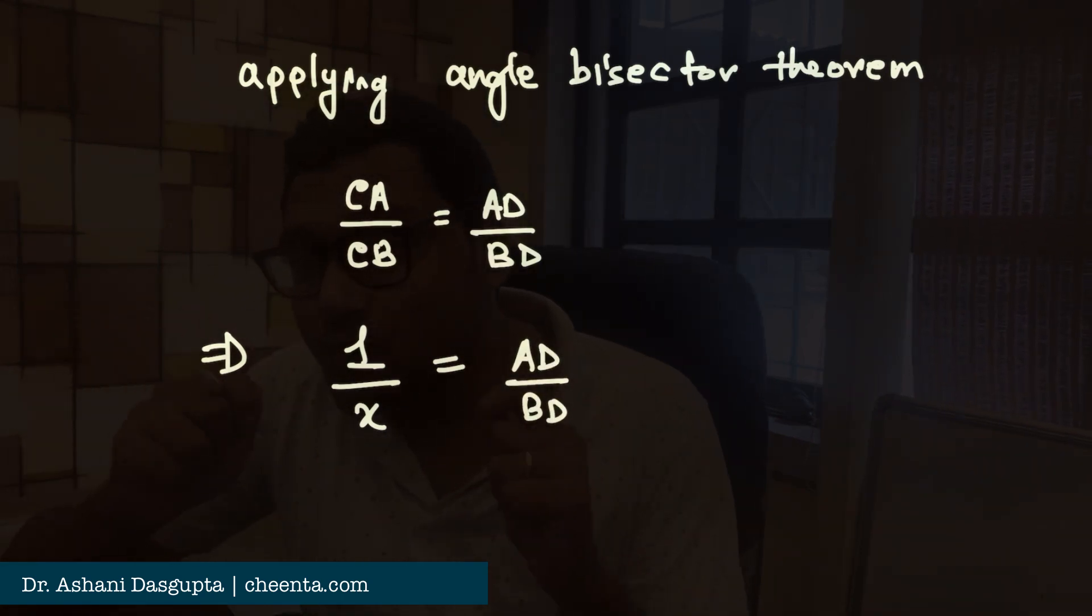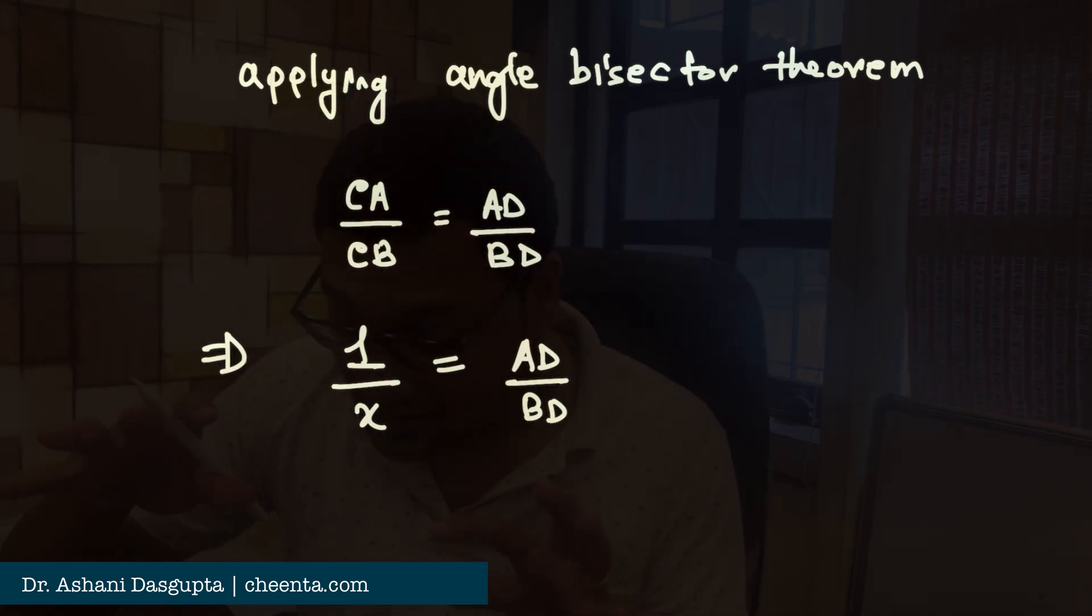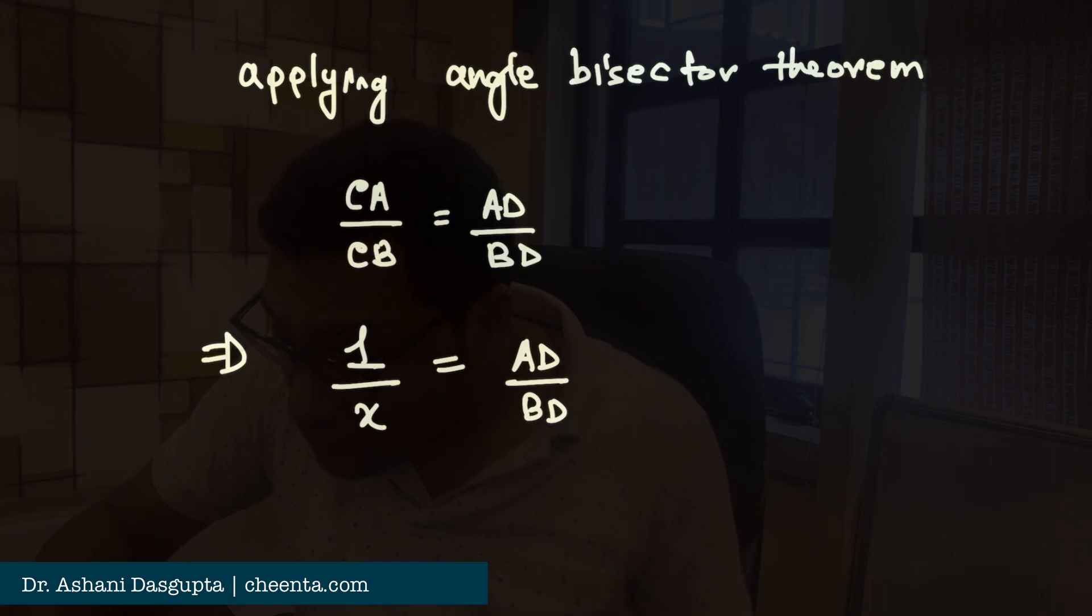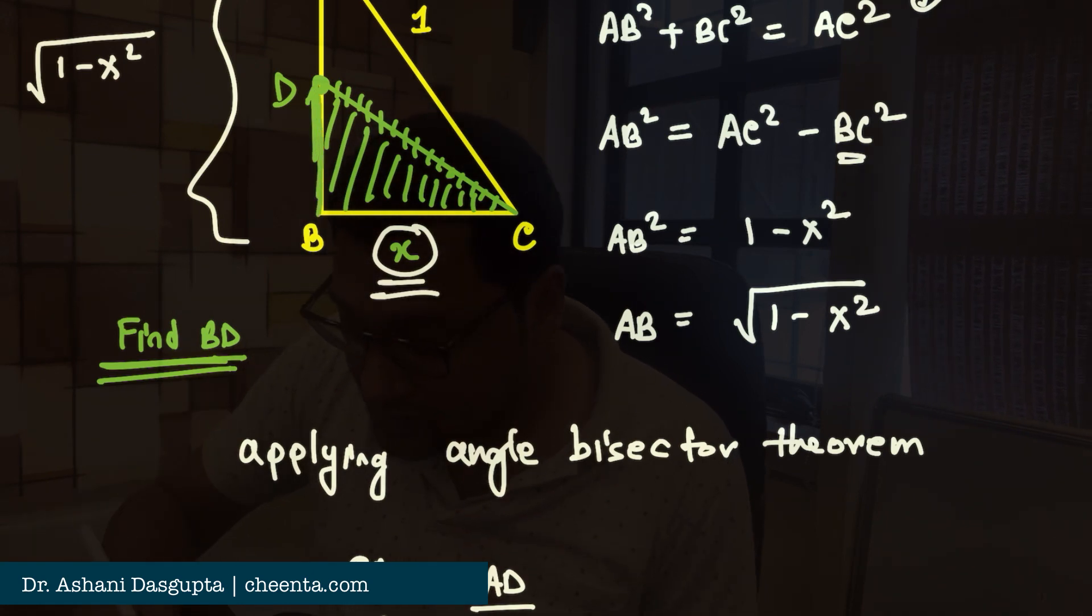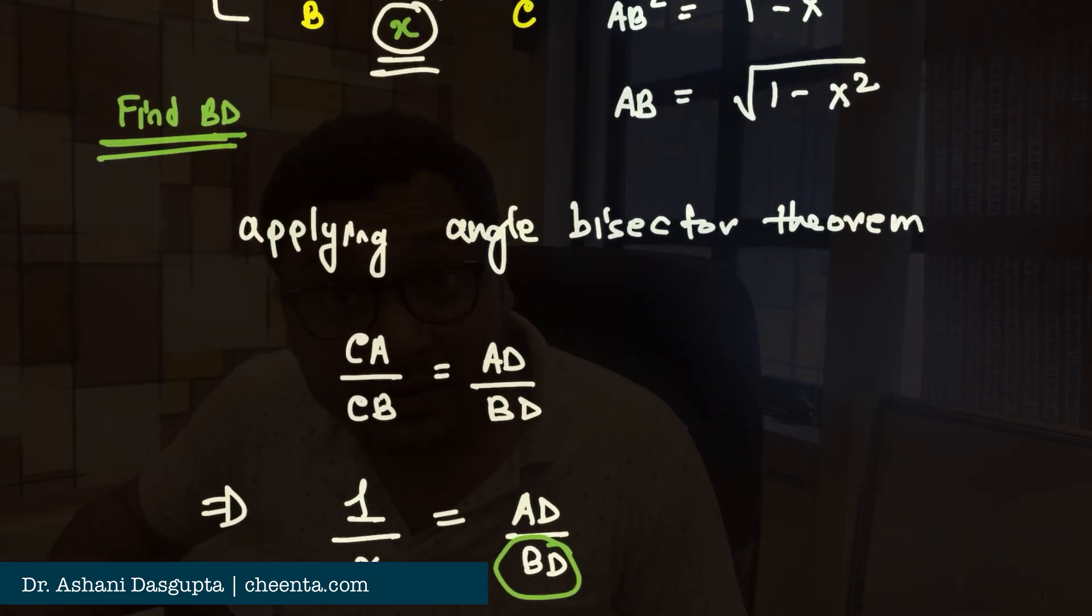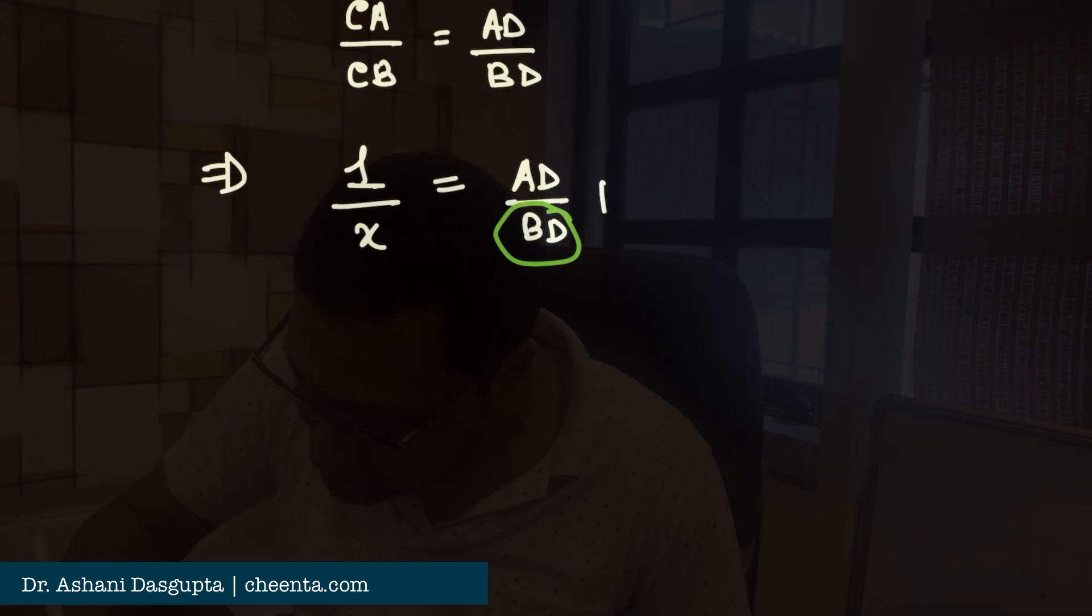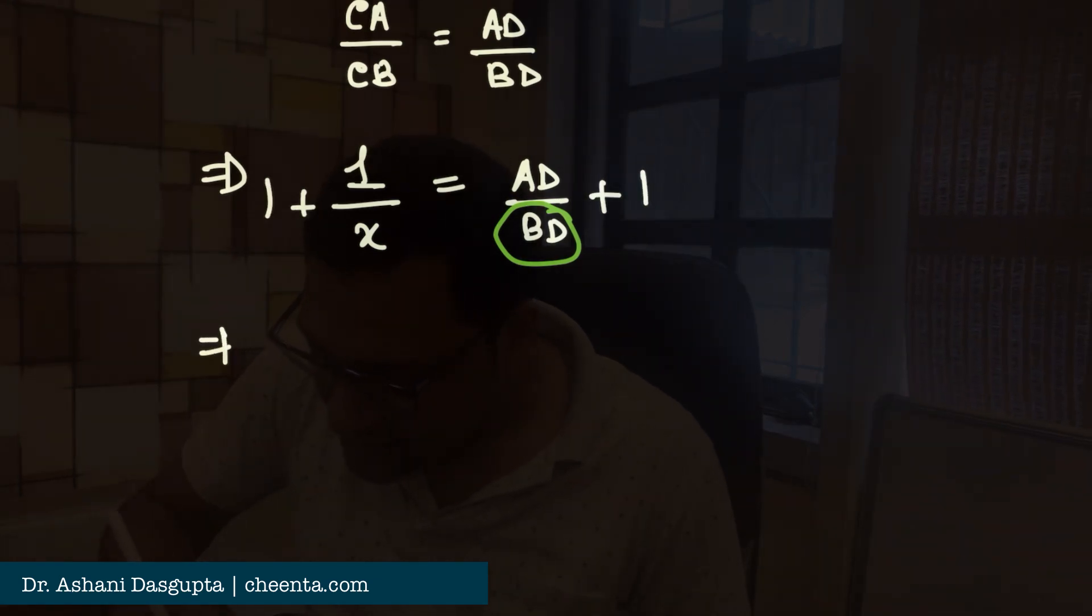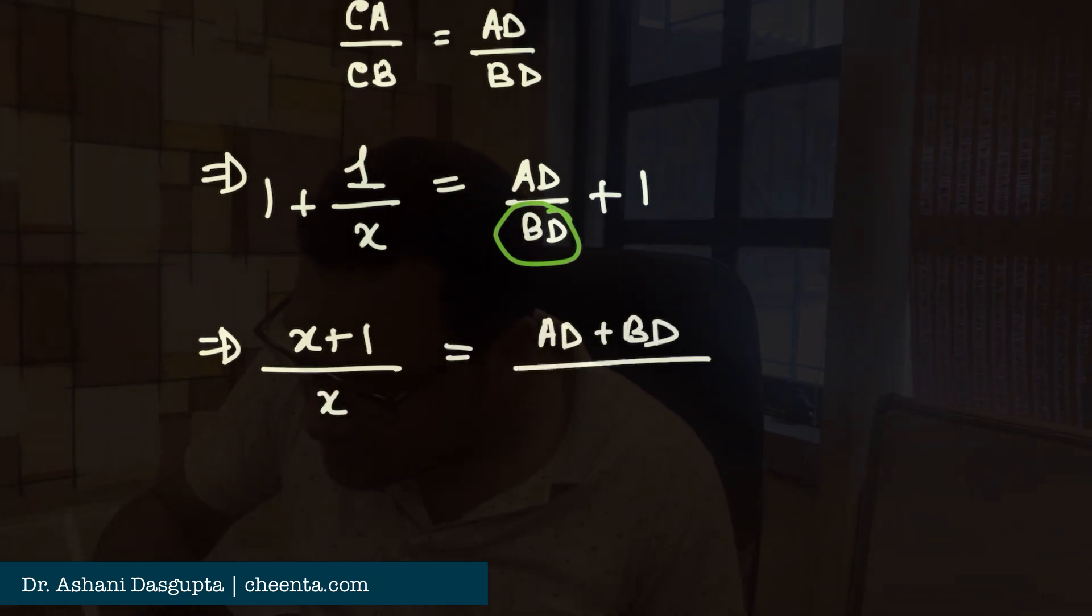Now, we just add 1 to both sides. Why do we do it? And it's very important why we do this. Notice that we want to find out BD, right? If we can find BD, then we can use Pythagoras theorem in the smaller triangle and we'll be able to find CD, right? So, how do we find BD? So, what we do is we will add 1 to both sides.